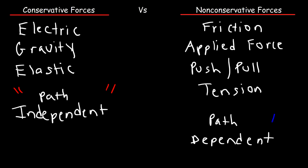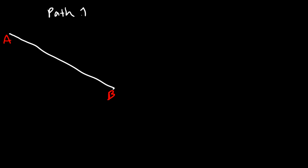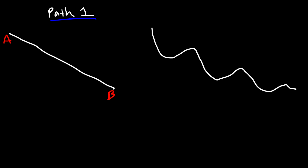Let's think of an example to illustrate this. Let's say we want an object to go from position A to position B. The first path is a direct path, and the second path from A to B is going to be a curved path. So we're still going from the same position — from position A to position B — but the road is different.